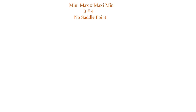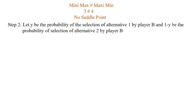The minimax value is 3 and the maximin value is 4. Since minimax ≠ maximin, the given game has no saddle point and follows mixed strategies. Let y be the probability of selection of alternative 1 by player B, and 1−y be the probability of selection of alternative 2 by player B.